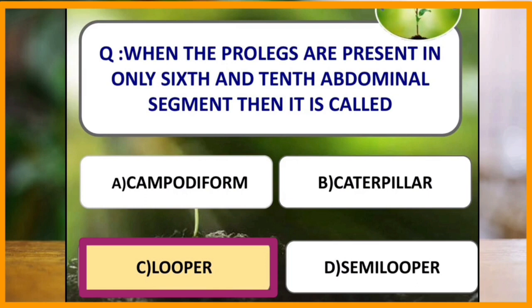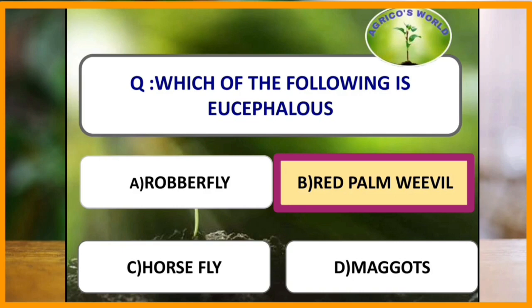In a semilooper, the first two pairs of abdominal legs, that is on the third and fourth segment, are reduced. Hence a part of the insect body forms a small loop during its movement, hence called semilooper. Which of the following is eucephalous? Red palm weevil is eucephalous. Eucephalous means the larva consists of a well-sclerotized head capsule.